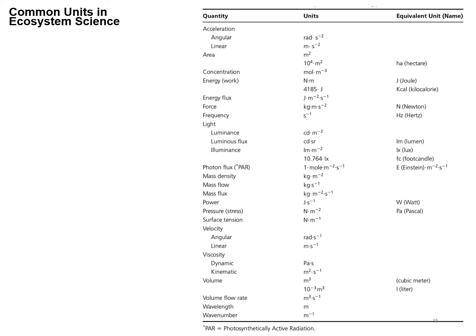Table of common units in ecosystem science. If you were doing wildlife biology, you might need acceleration. Areas, concentrations obviously. Energy, force, frequency which we use in remote sensing—that's actually one per second, or per second is the value of Hertz. Light values, luminance. Photon flux is often used in eco-physiological models where you want to know how many photons are coming in for a given unit time. Mass density, mass flow, mass flux, power, velocity, viscosity, volume. Just various things that you see in ecosystem models.